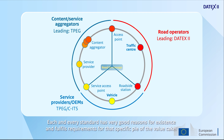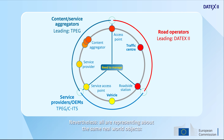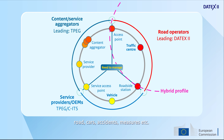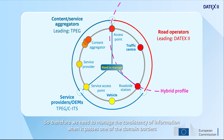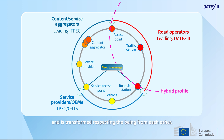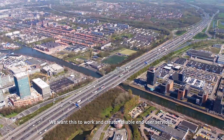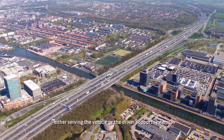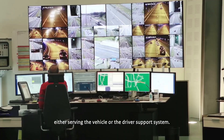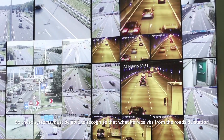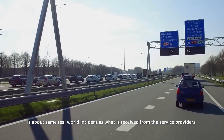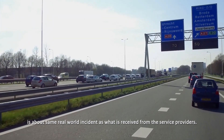Each and every standard has very good reasons for existence and fulfills requirements for that specific piece of the value chain. Nevertheless, all are representing about the same real-world objects – roads, cars, accidents, measures, etc. So we need to manage the consistency of information when it passes one of the domain borders and is transformed. We want this to work and create reliable end user services, either serving the vehicle or the driver support system. These systems must be able to recognise that what is received from the roadside station is about the same real-world incident as what is received from the service providers.